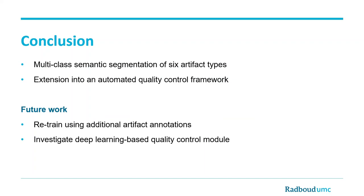In this work, we developed the first deep learning-based multi-class semantic segmentation network that is trained to detect six different artifact types. We also showed how this network can be extended into an automated quality control framework to assist pathologists in routine clinical practice. In future research, we aim to collect more annotations of rare artifact types and retrain the artifact segmentation module in order to make it generalize better to unseen data.